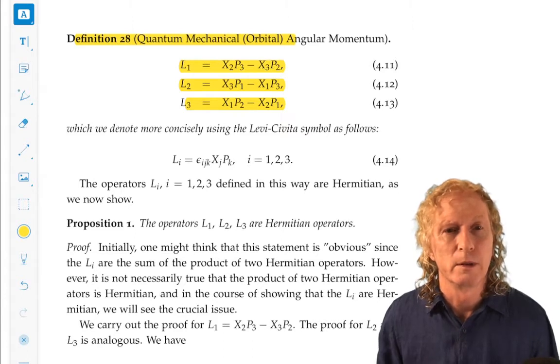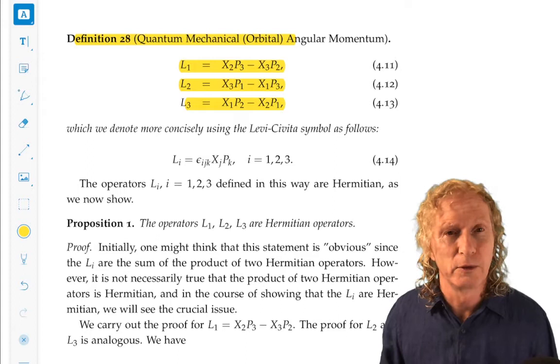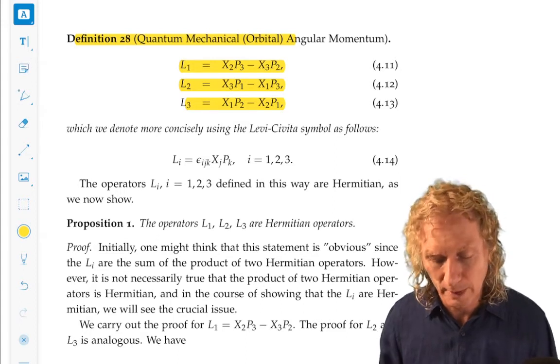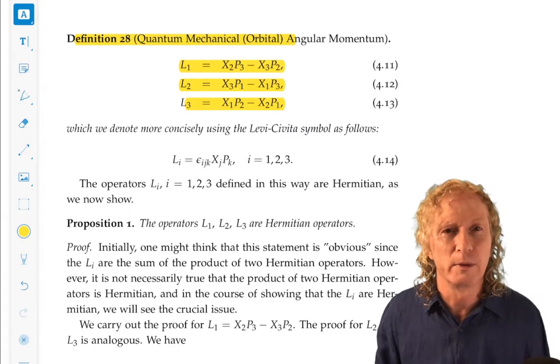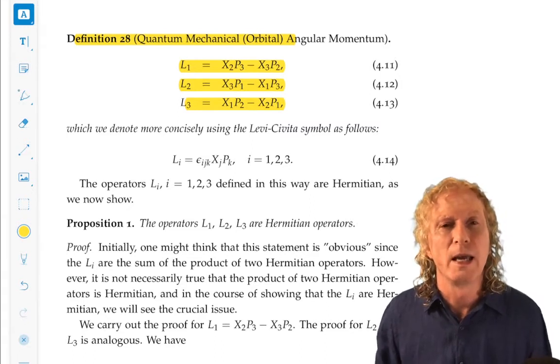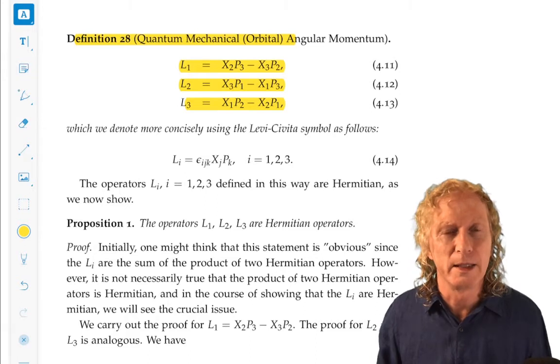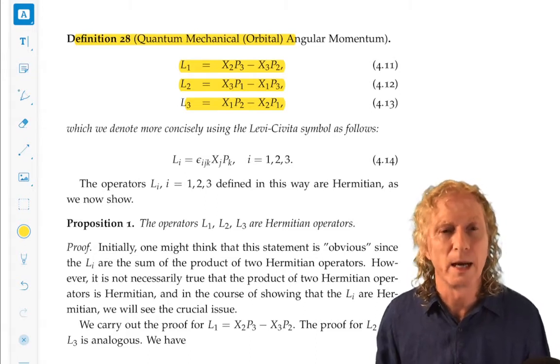And when we developed the position and momentum operators earlier on, we developed them in three dimensions also. So, you can look back and see that. So, it's just the obvious. Multiplication by the corresponding coordinate for position. And h-bar over i, d by dx_i for p_i, i equal 1, 2, 3.